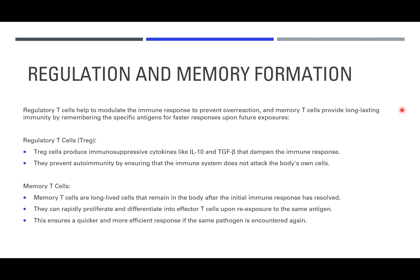For regulation and memory formation, we'll have regulatory T cells — Tregs — being produced. These will actually produce immunosuppressive cytokines that will dampen the immune response. The immune response can't go on forever; once the threat has been neutralized, these Tregs produce suppressants and actually reduce the immune response.